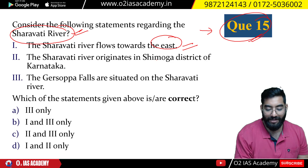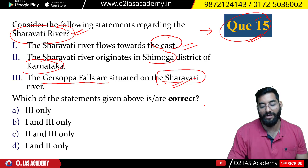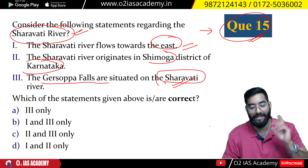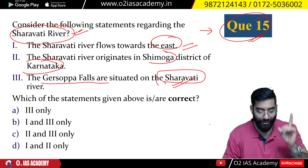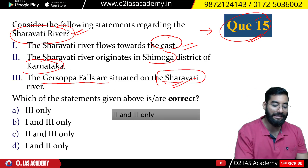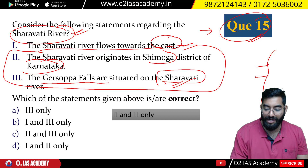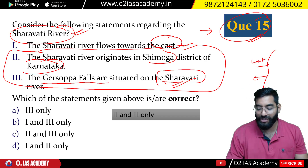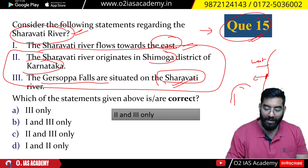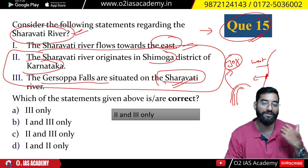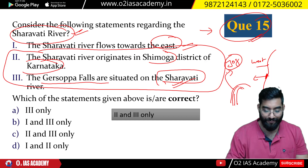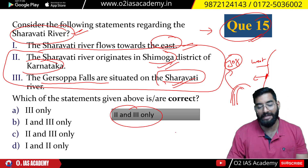Question 15: Regarding Sharavati — it originates from Shimoga district, Karnataka, and Jog Falls (also called Jarsopa Falls) are located on the Sharavati river. The Sharavati originates from the Western Ghats and drains towards the west into the Arabian Sea. Jog Falls is one of India's highest waterfalls in terms of vertical distance. The correct answer is two and three.